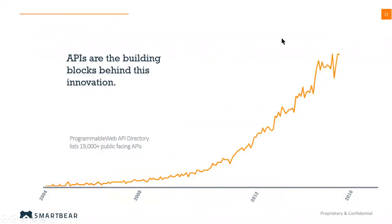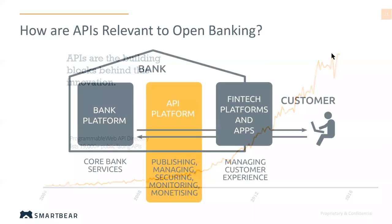APIs are a big driver of innovation. Based on the programmable web API directory, there are over 19,000 public-facing APIs listed, covering a surprising range of organizations and services. They're quite an easy way to draw on data that's already been compiled or built up by other companies and services, so a team can focus on developing an innovative application using that data rather than compiling and managing all of it themselves.